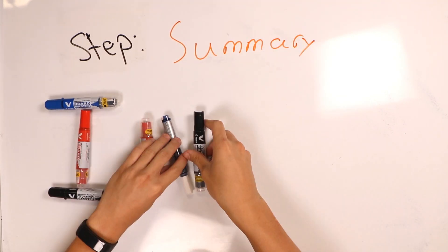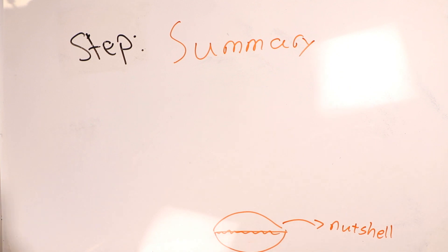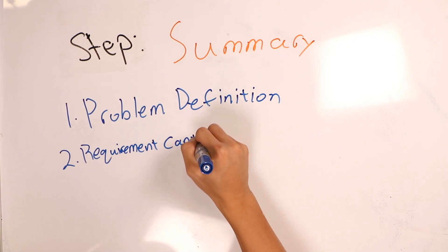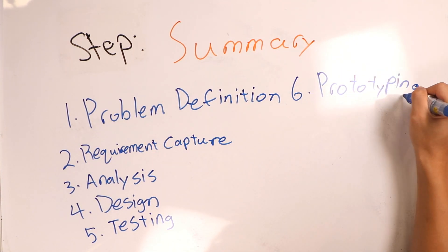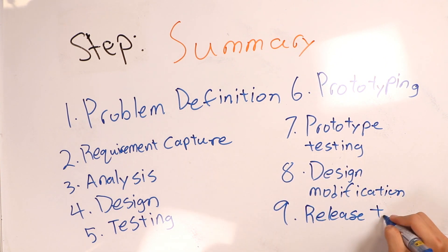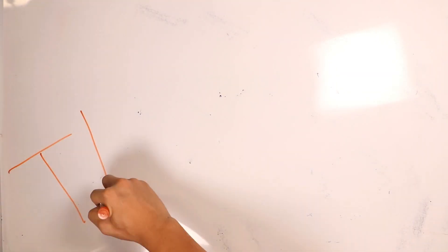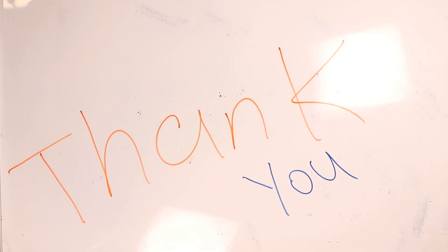In summary, there are 9 steps in the design process which are problem definition, requirements capture, analysis, design, testing, prototyping, prototype testing, design modification, and release to production. This is the end of Draw My Design. Thank you!